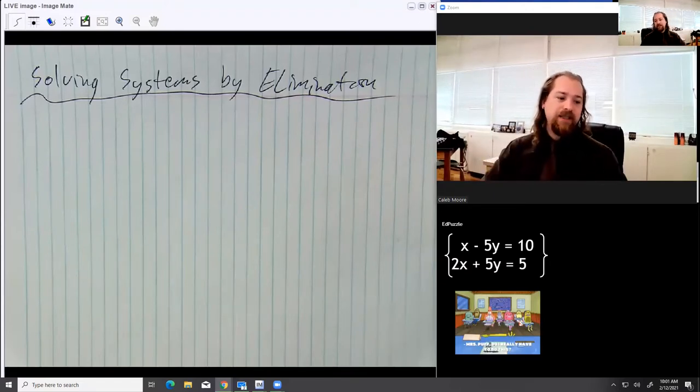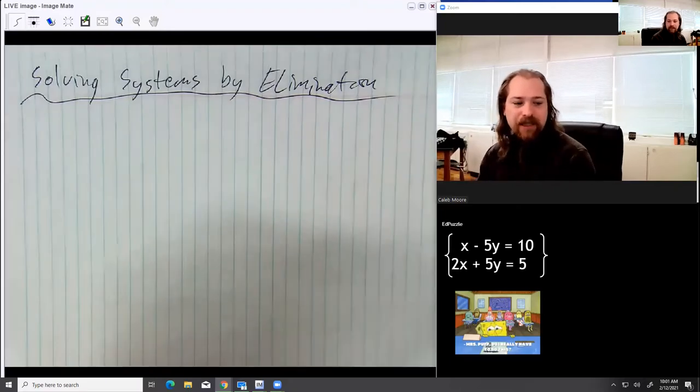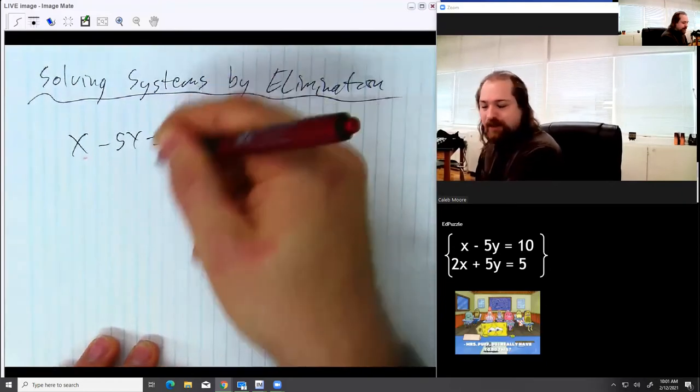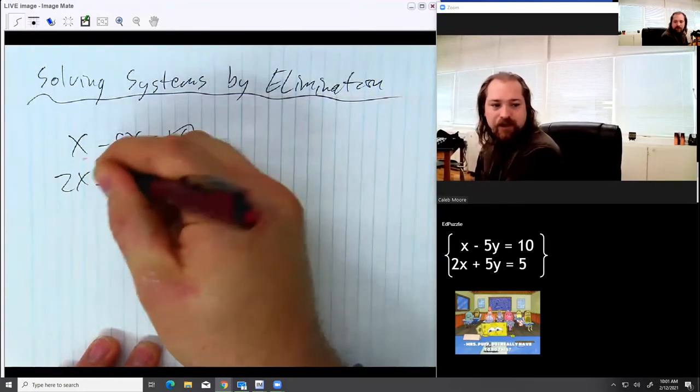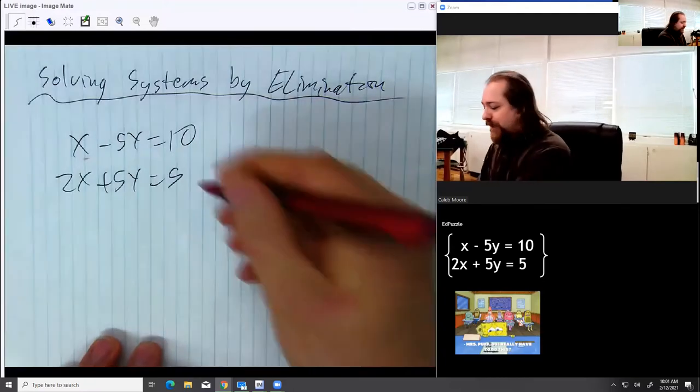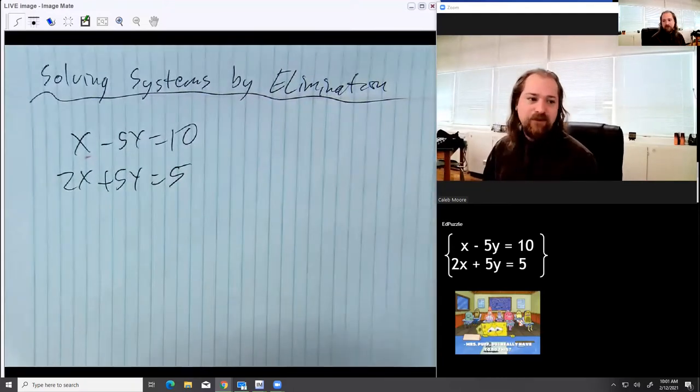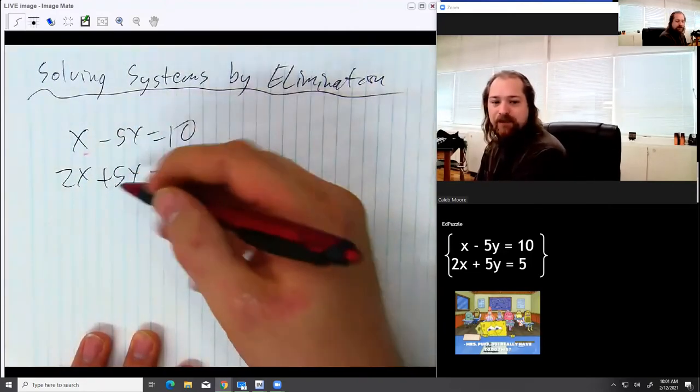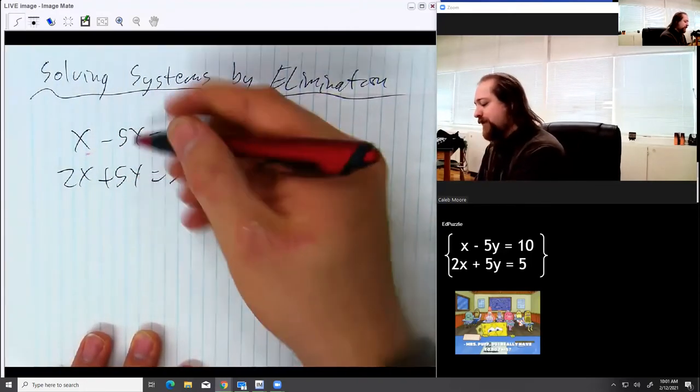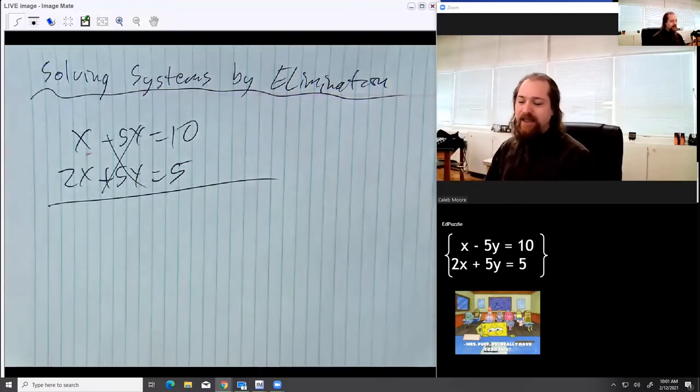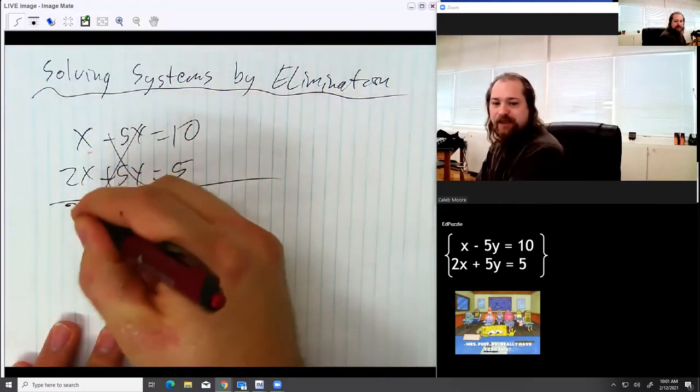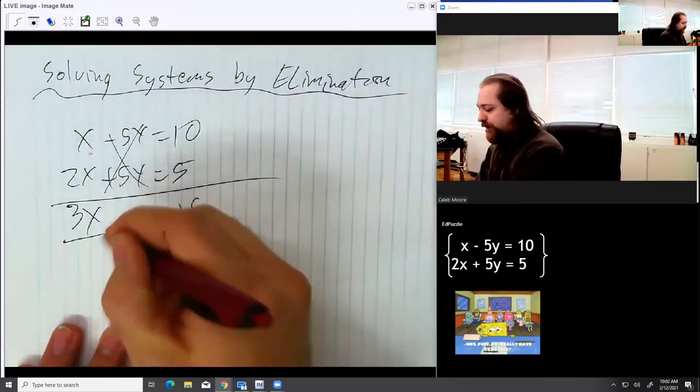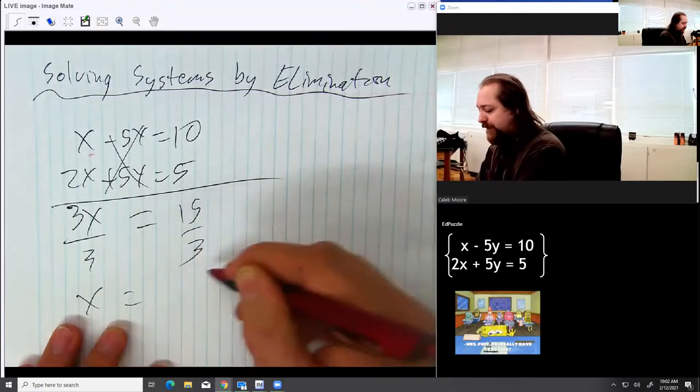So first of all, let's go ahead and look at this one down here. I've got x minus 5y equals 10, and I've got 2x plus 5y equals 5. To go ahead and solve this, what's the first step? That's right. We're going to cancel out the two opposite numbers. Negative 5y plus 5y is going to cancel. We're going to add everything else together. So x plus 2x is 3x. 10 plus 5 is 15. 3x equals 15, which means dividing by 3 is going to give me x equals 5.